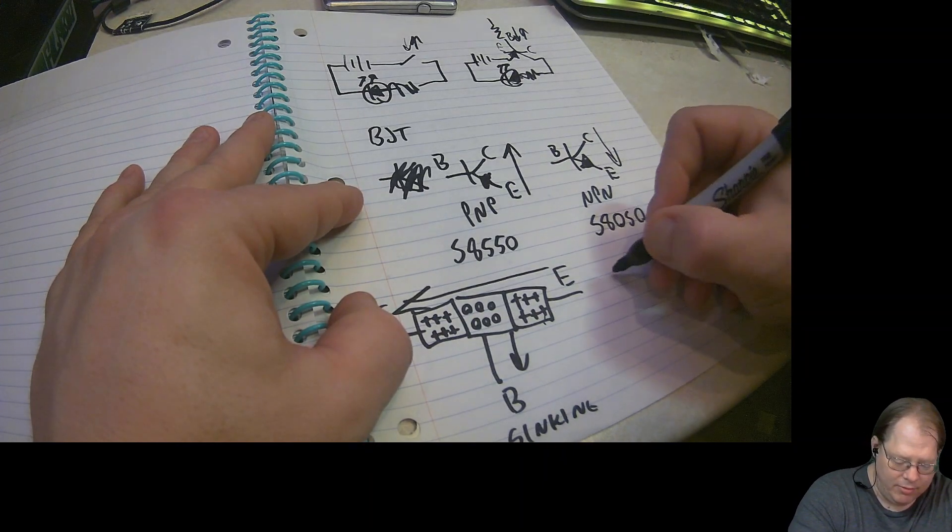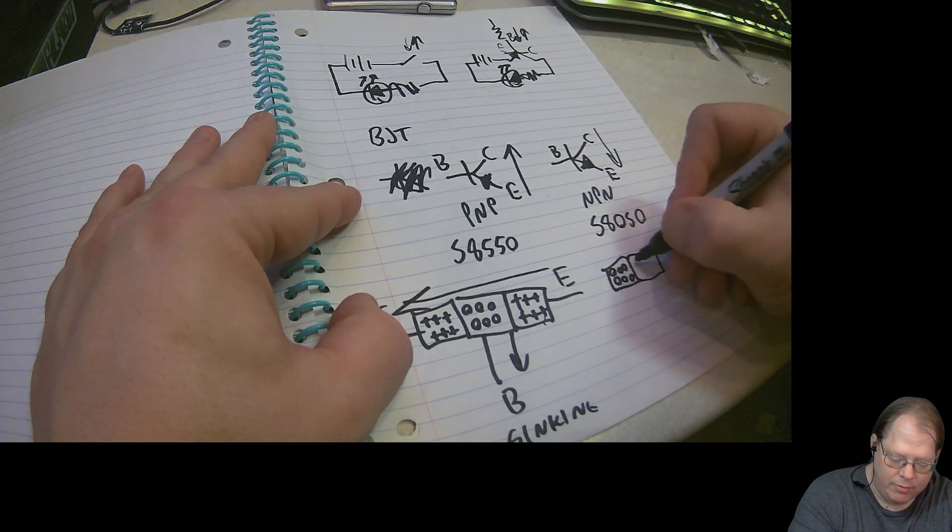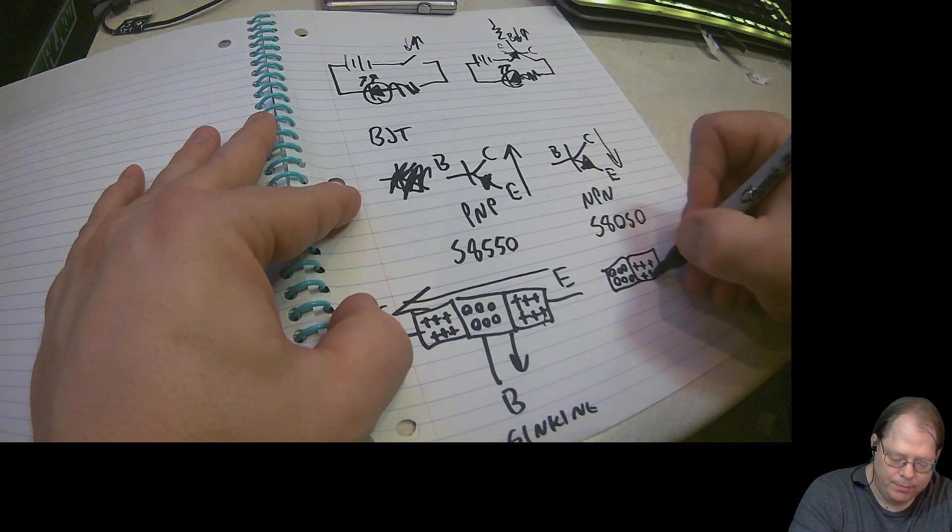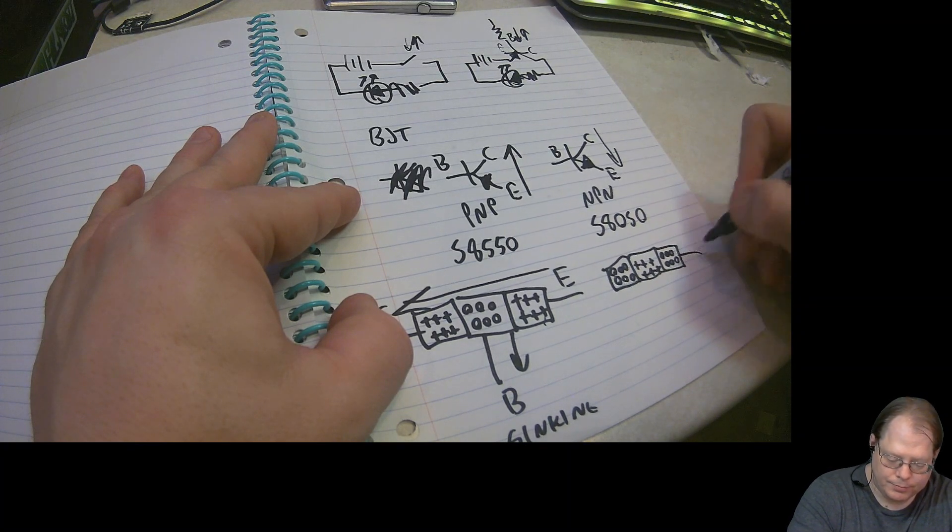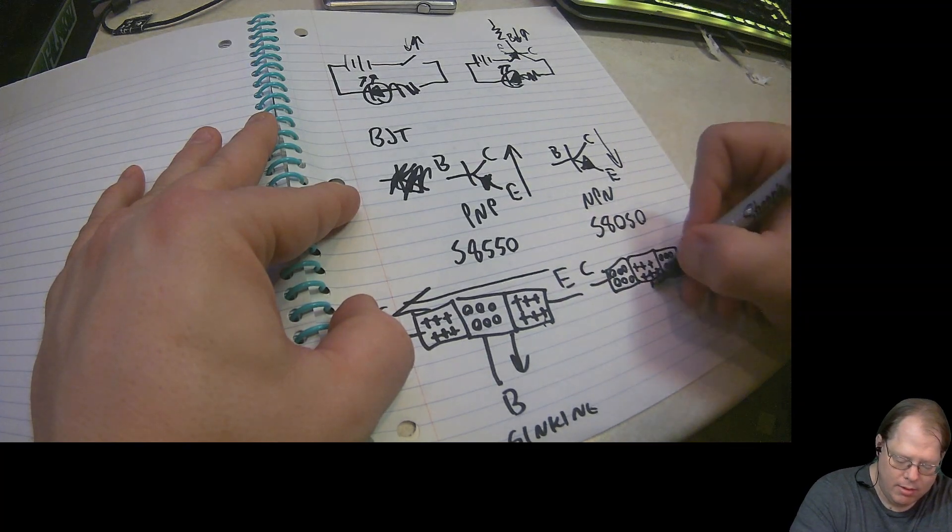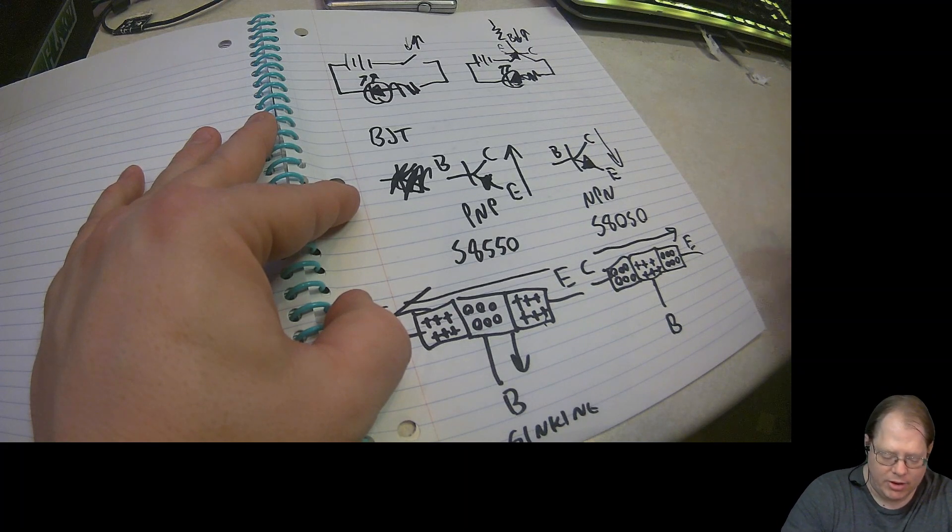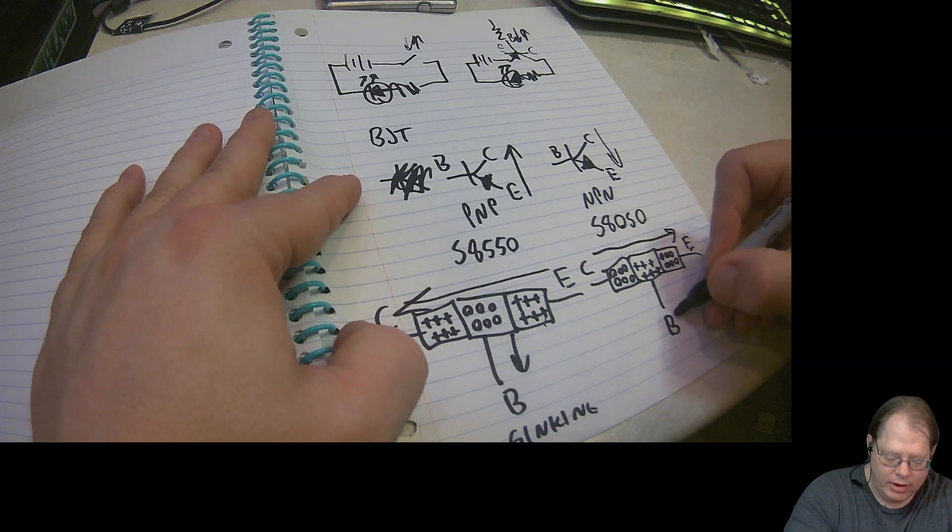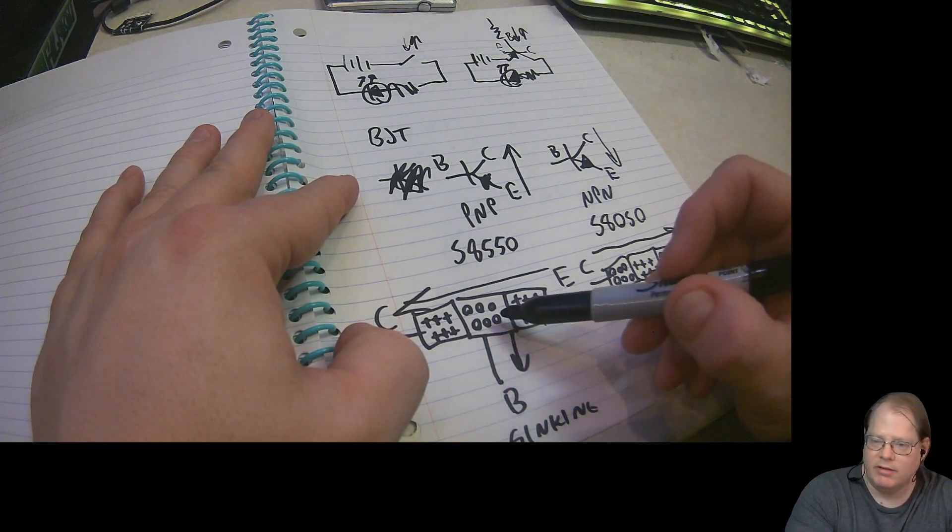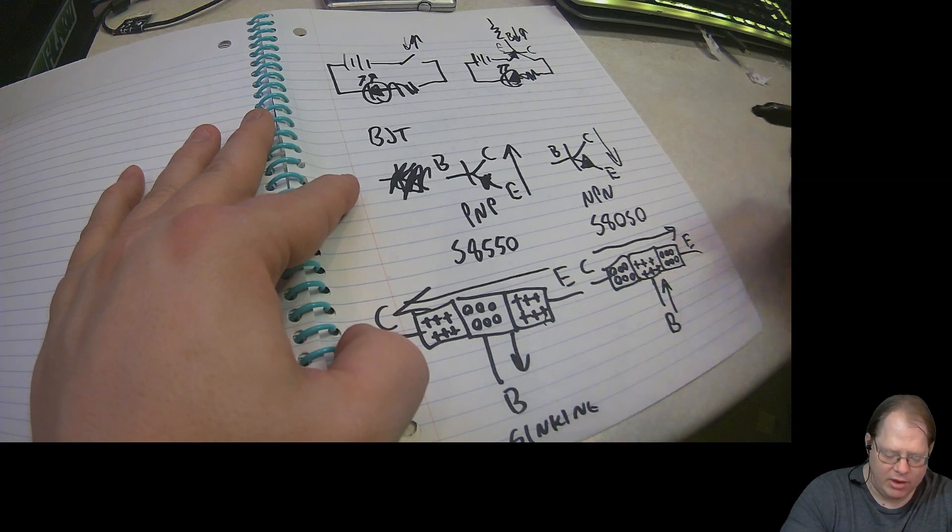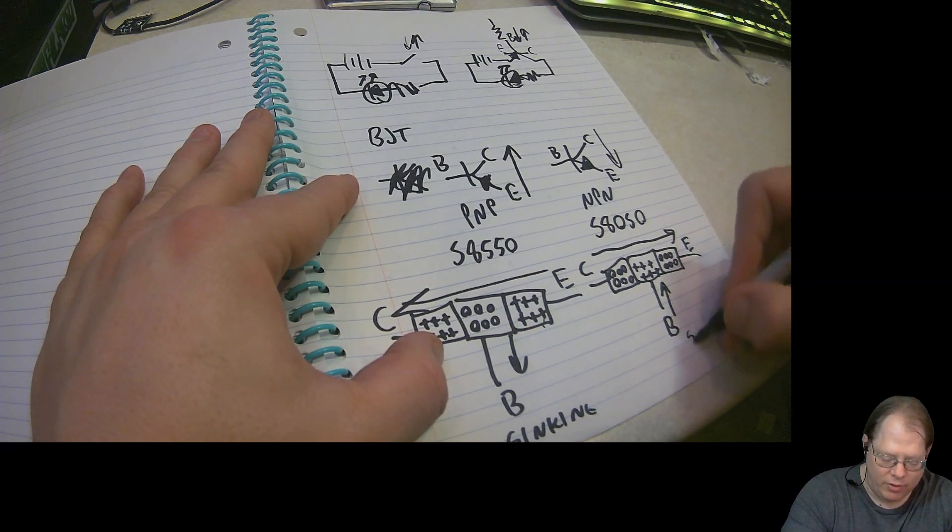So, in an NPN transistor, we have an N-type bonded to a P-type, bonded to an N-type. And in order to get current to flow from collector to emitter, we need to increase the voltage. It's always about where the base is bonded. If the base is bonded to the N-type, we need to lower the voltage or use a sinking current. If it's bonded to a P-type, we need to use a higher voltage or a sourcing current.